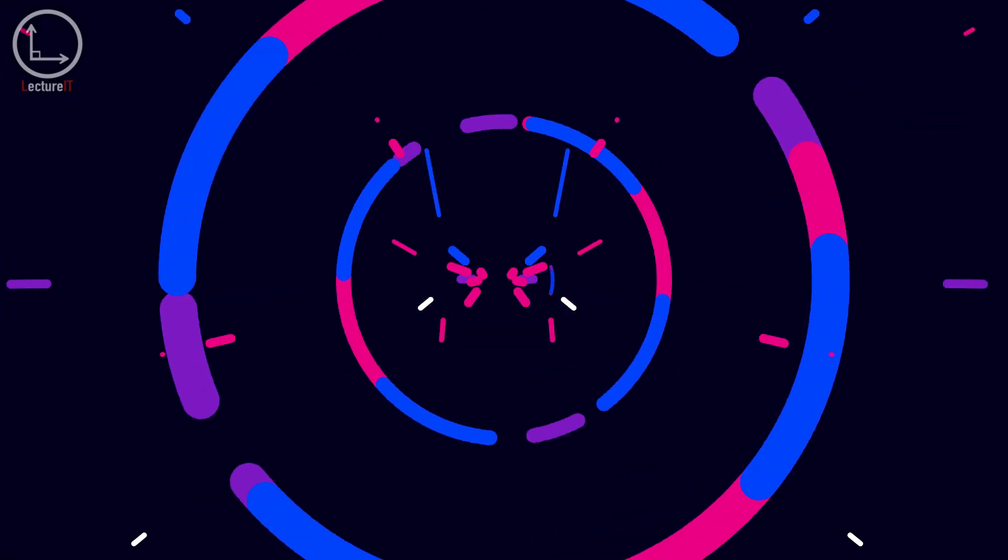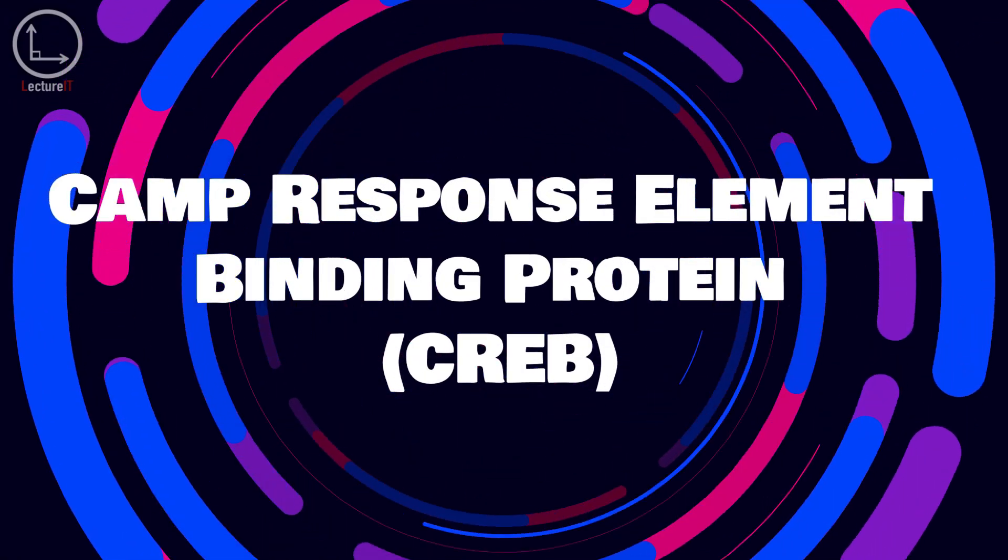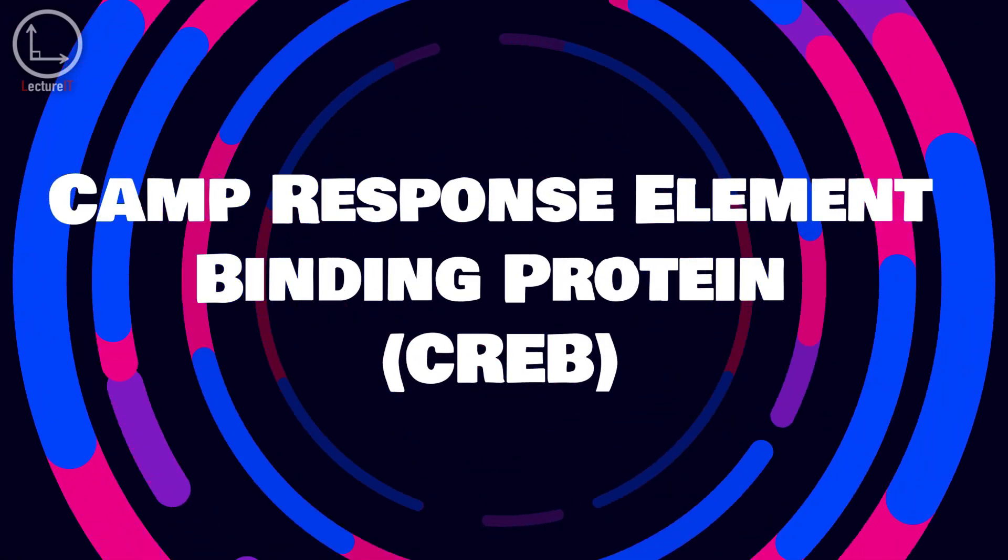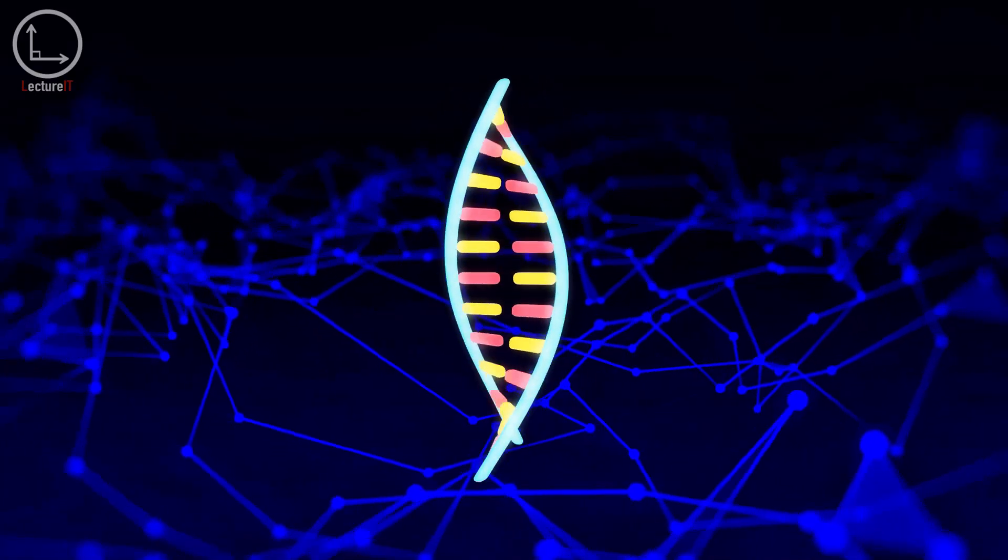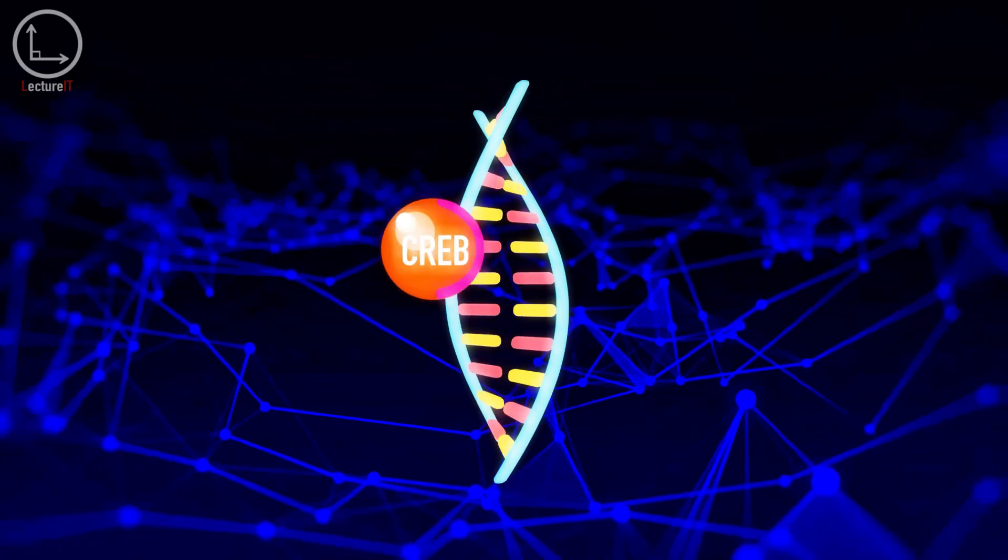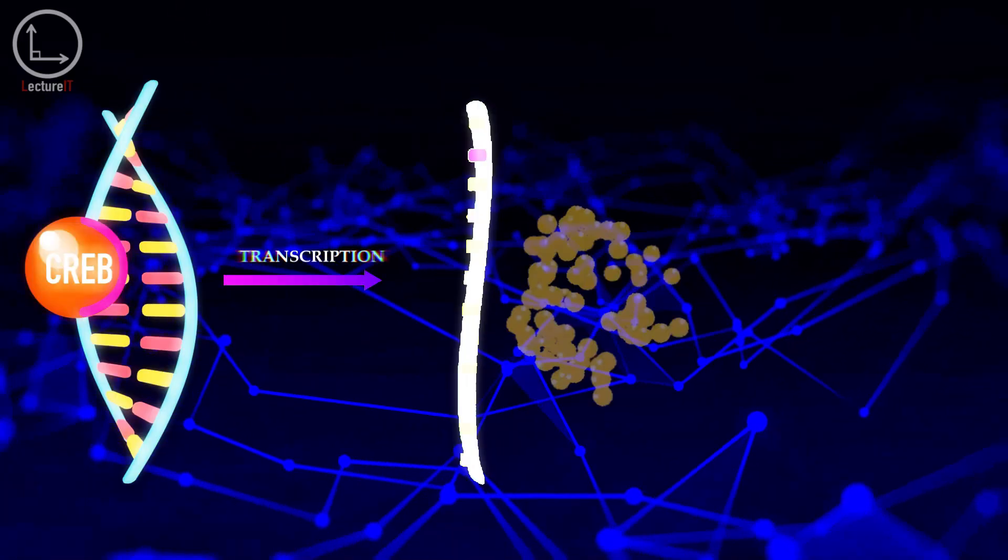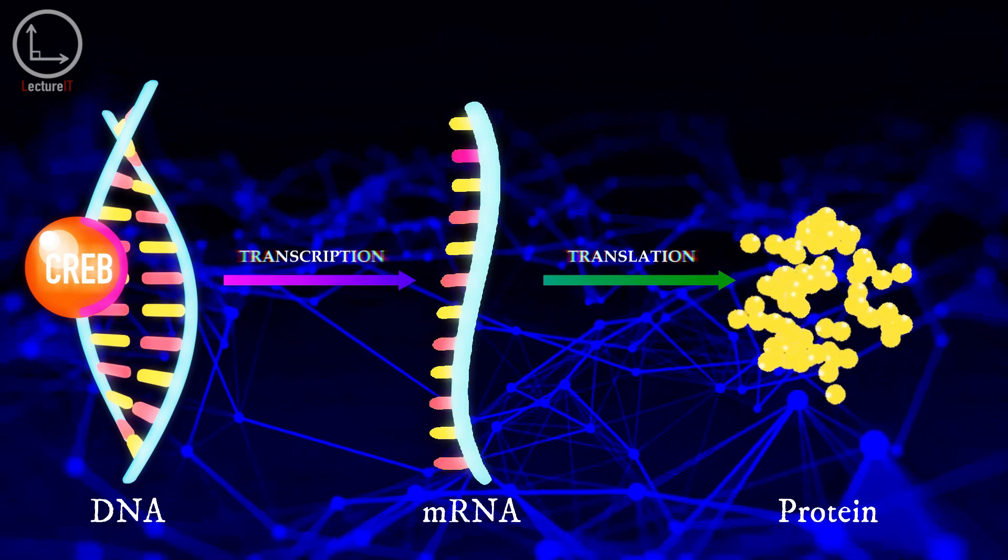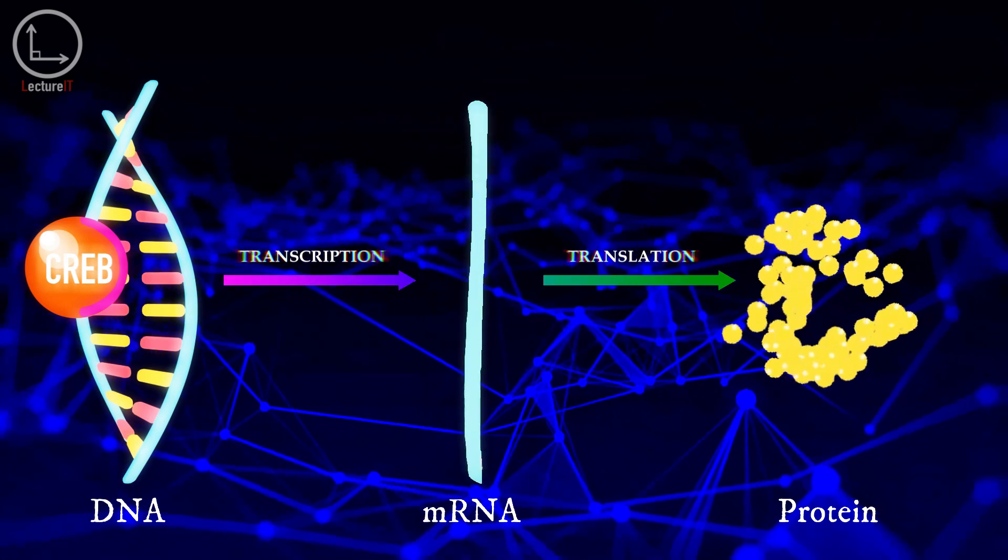At the heart of this process is a protein called cAMP-response element binding protein. CREB is a transcription factor that binds to specific regions of DNA, promoting the transcription of genes involved in synaptic plasticity and long-term potentiation.